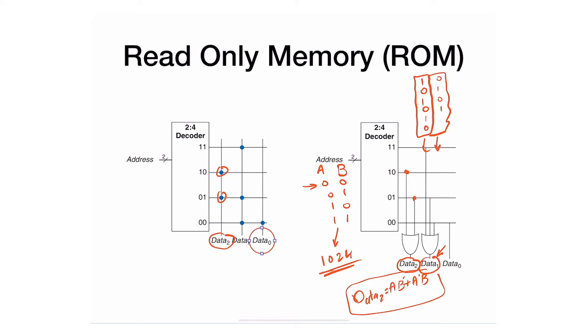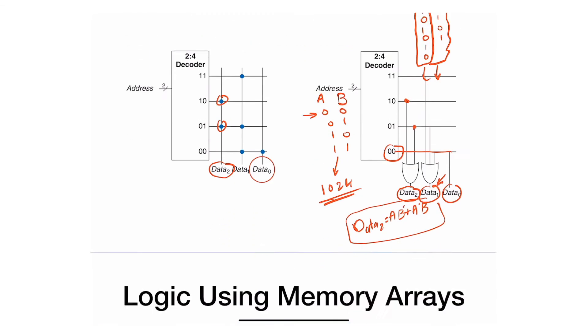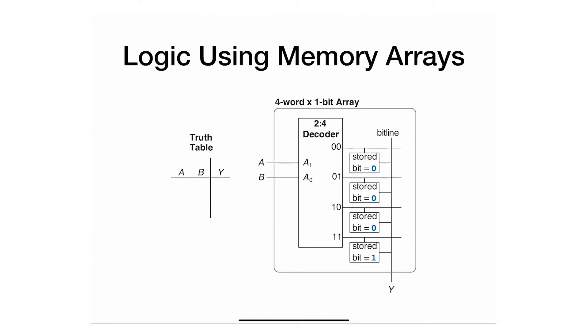This one is very simple. Data zero is only asserted when it's zero zero—that's a NOR. So data two is an XOR, data zero is a NOR. You can store other gates. Take a look at that one at home and see what type of gate this gives you.